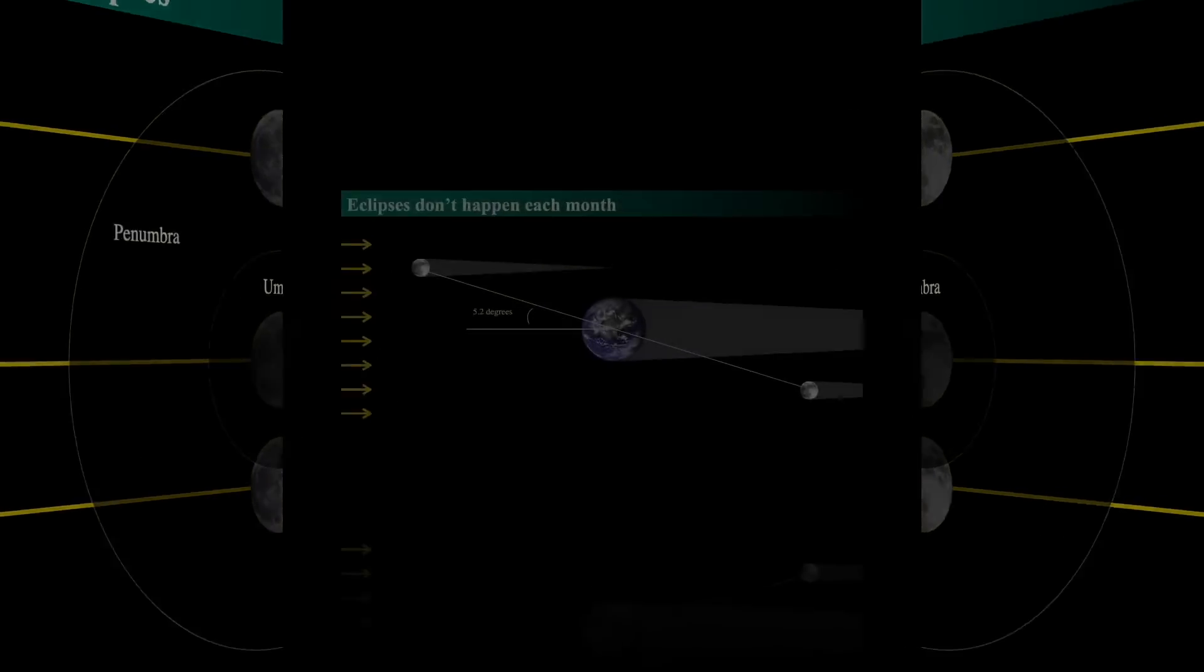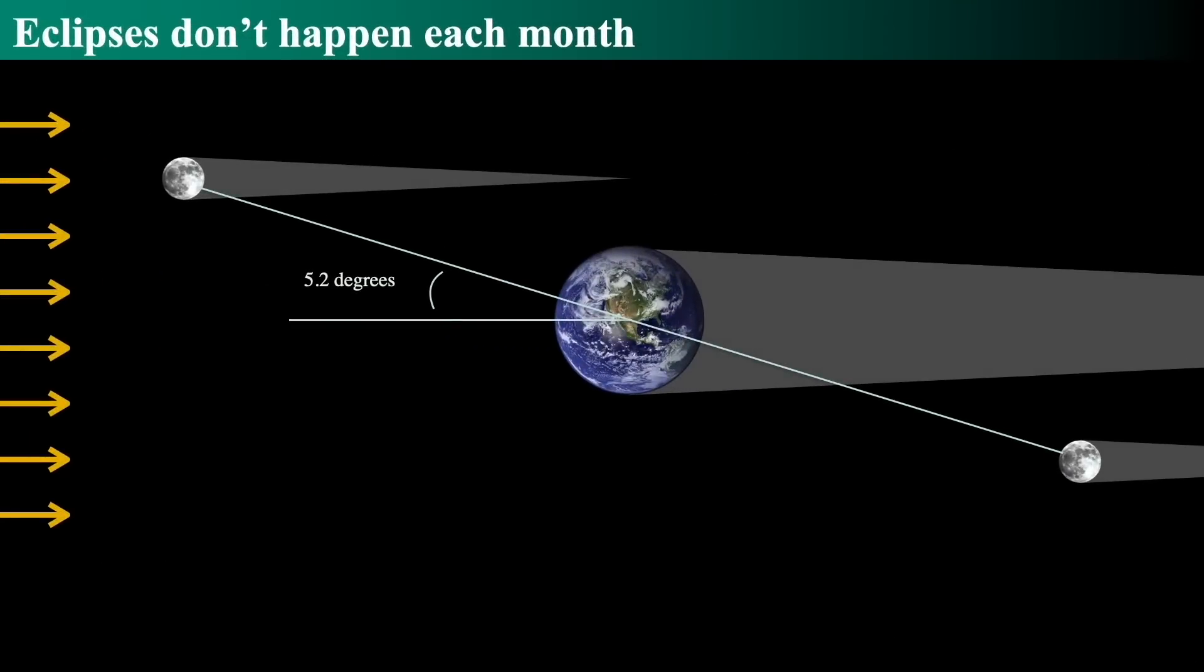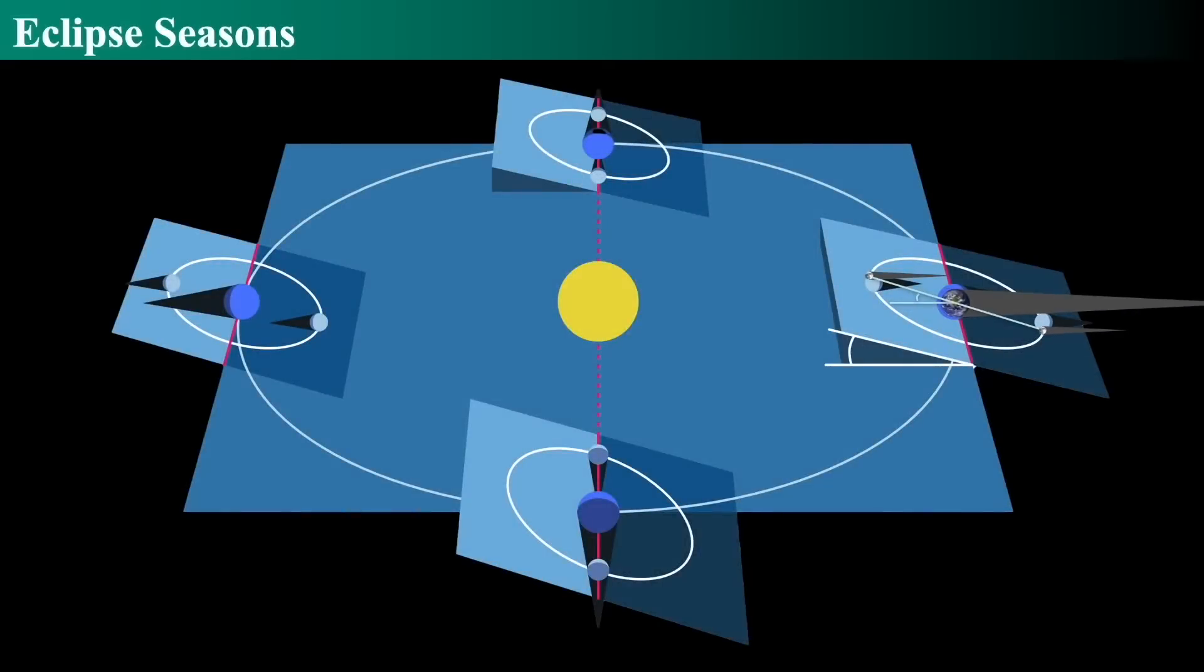It's also important to note that these don't happen every month. And the reason is, is because the Moon's orbit is tilted five degrees with respect to the Earth's orbit around the Sun. So the Moon's orbit does not, so the Moon doesn't always pass through the shadow. And therefore, we have to look for eclipses during eclipse seasons.